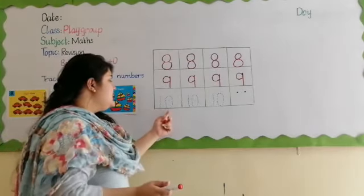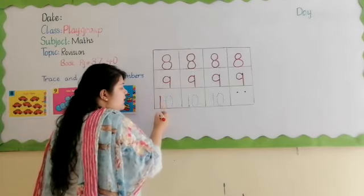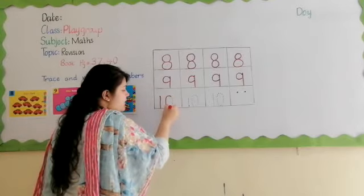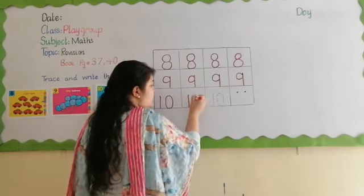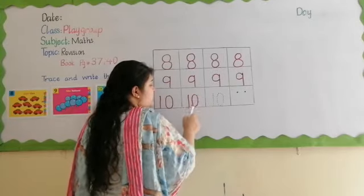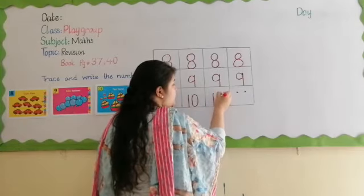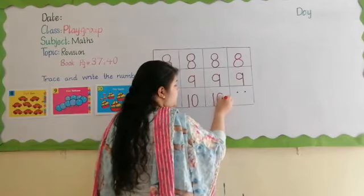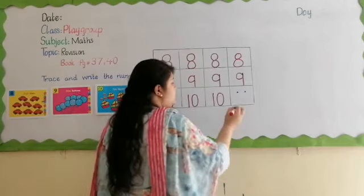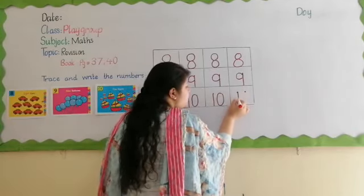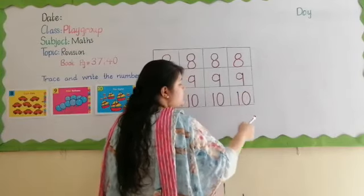Next number is ten — one zero, ten. Come down and down — one. Go round and round — zero. One zero, ten. Again: go down and down — one. Go round and round — zero. One zero, ten. Again: go down and down — one. Go round and round — zero. One zero, ten. Let's start: go down and down — one. Go round and round — zero. One zero, ten. Very good.